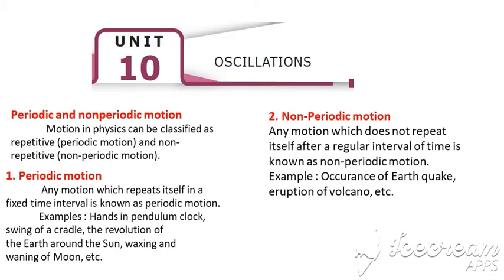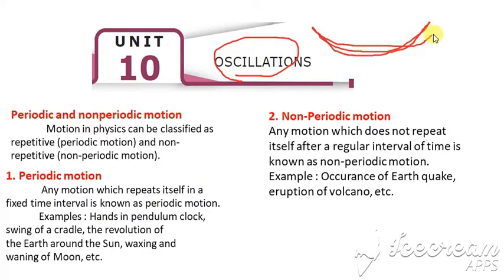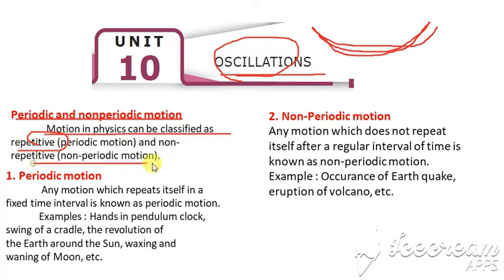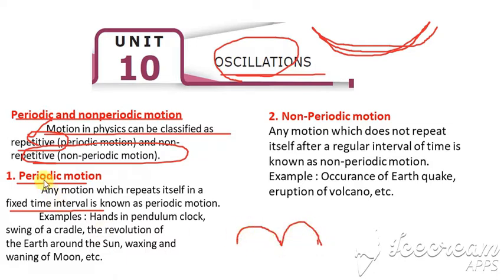Good morning students. Today we are going to see the next lesson, which is oscillations. Oscillation is the to and fro motion. Based on this, we are going to see what is periodic and non-periodic motion. Motion in physics can be classified as repetitive and non-repetitive. Periodic motion is any motion which repeats itself in a fixed interval of time. Examples include hands of a pendulum clock, swinging of a cradle, and the revolution of Earth around the Sun.